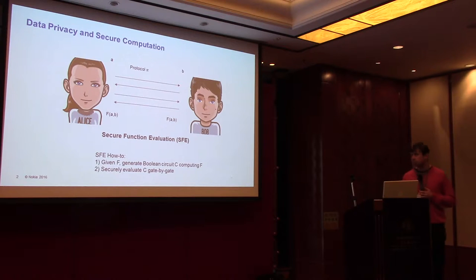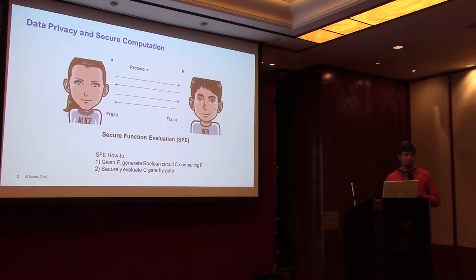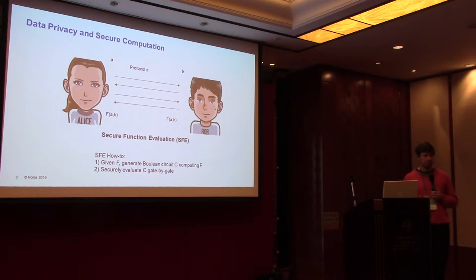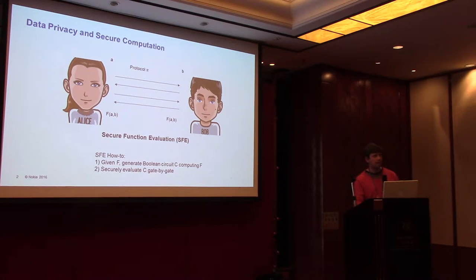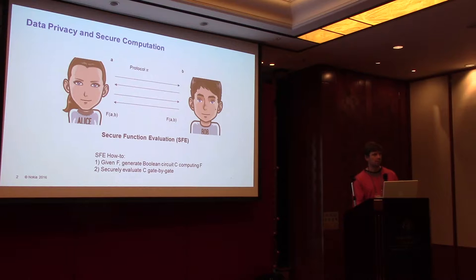At a very high level, doing secure computation is two steps. Step one: given a function F, you generate a circuit that implements the function F. Step two: you evaluate the circuit using secure computation. The vast majority of work focuses on step two, and we are pretty good at it. In garbled circuits, we need only a couple of PRF evaluations per boolean gate, and send two encryptions per boolean gate — 32 bytes. On a simple laptop and a LAN, you can evaluate millions of gates per second, and we're beginning to hit the limit of what we can hope to achieve.